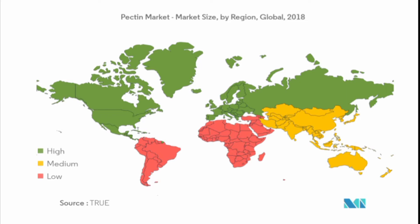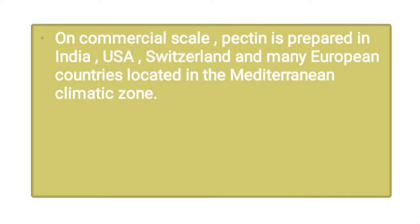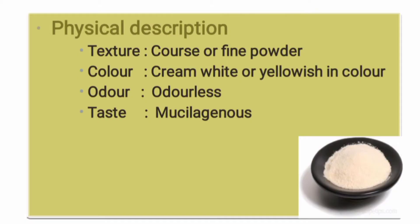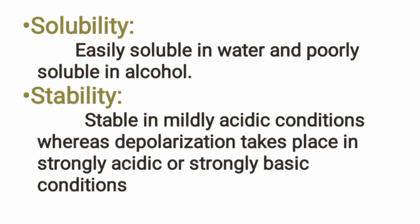Commercially, pectin is prepared in India, USA, Switzerland, and other European countries, mainly in the Mediterranean zone. The characteristics of the coarse or fine powder: it is cream-white to yellowish in color, with a mucilaginous taste. It is stable in mild acidic conditions, but degrades under strong acidic or strong basic conditions.